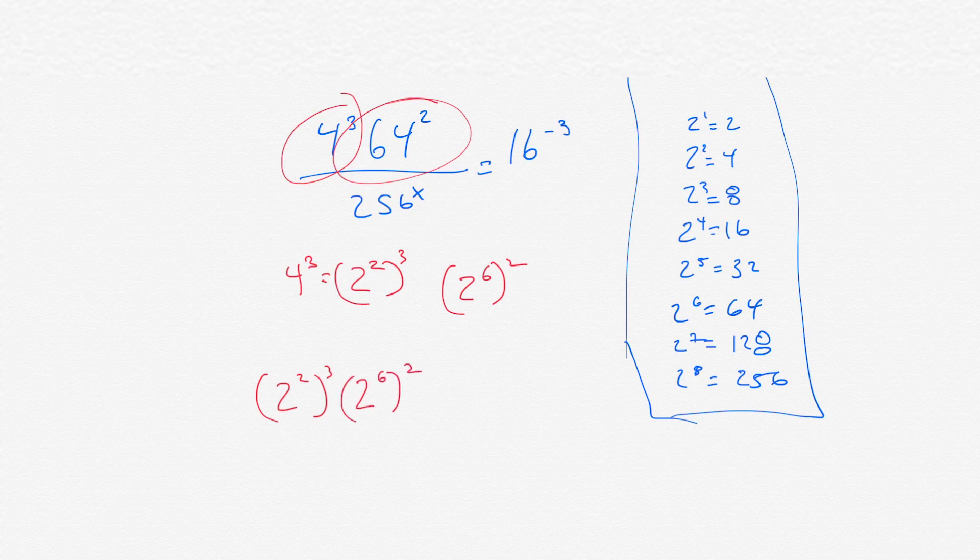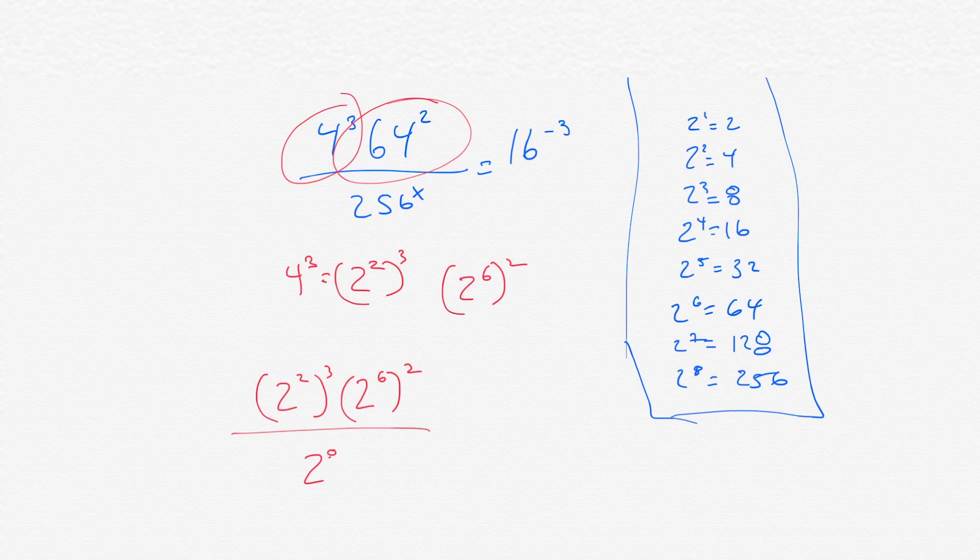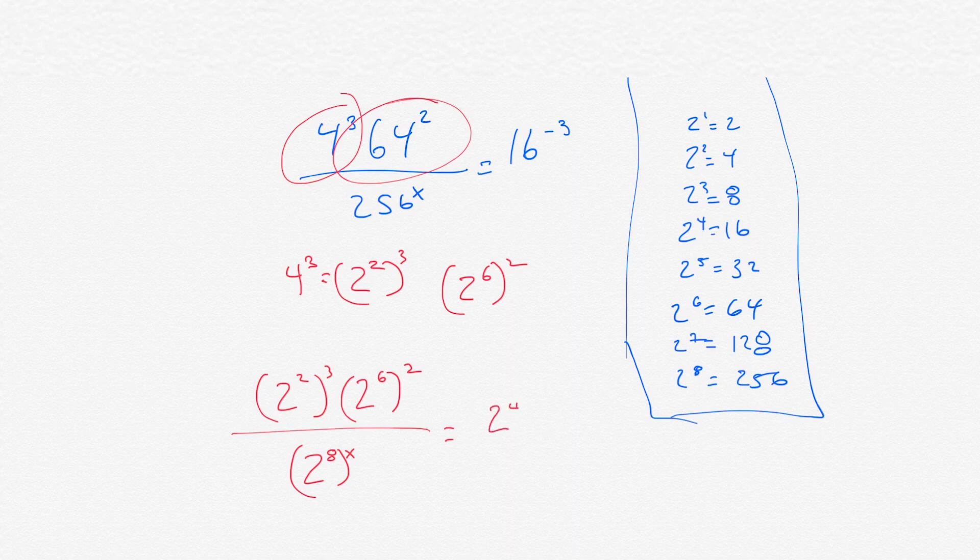And then, on the bottom, we have 256 to the x. Now, 256 is like 2 to the eighth power, and all of that is raised to the x. And then, on the right side, we have 16 to the negative third. 16 is like 2 to the fourth, and that is raised to the negative third.